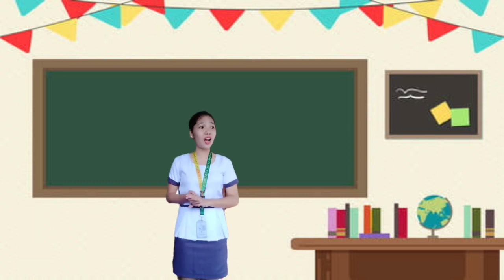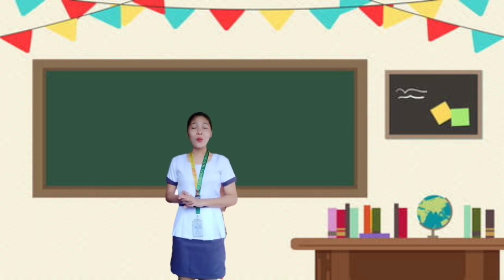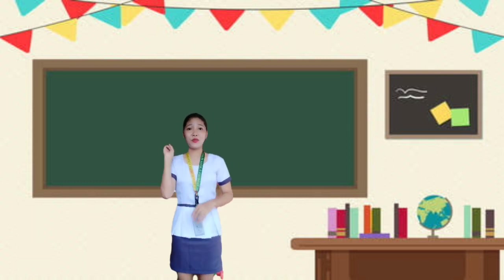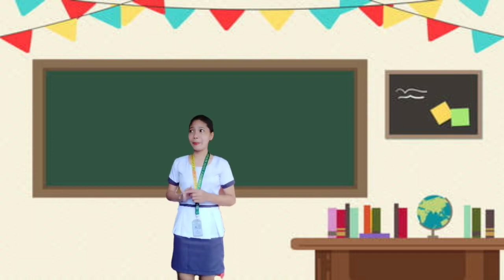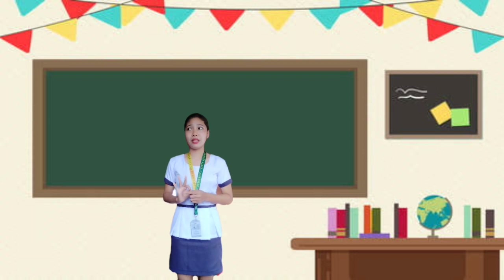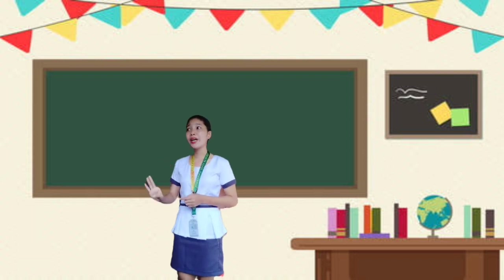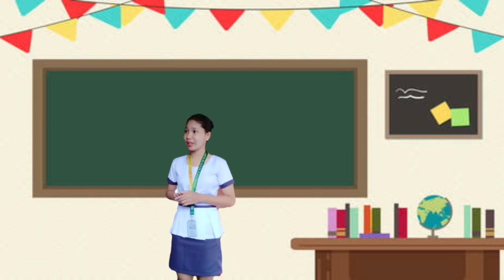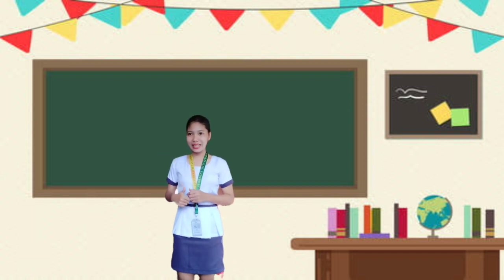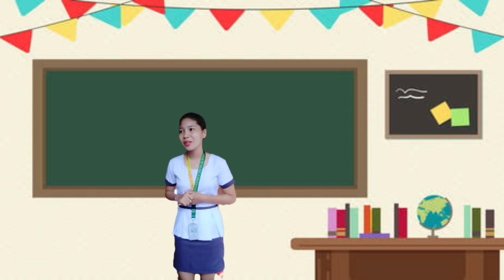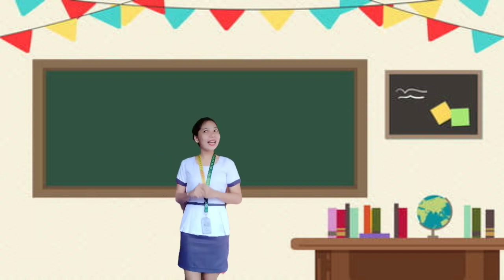Before we begin our discussion, let's first recall our guidelines when we are having our lessons. What are those five guidelines? First, be prepared. Second, be positive or be happy. Third, be participative. Fourth, be respectful to your classmates and to your teachers. And lastly, be productive. Do you understand, class? Excellent.